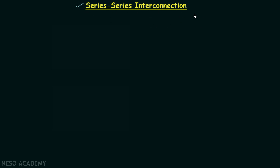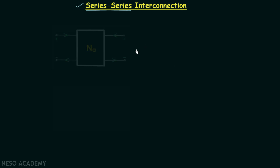In this type of interconnection, two or more 2-port networks are connected in a series-series manner. I will explain what series-series means after constructing the simplest series-series interconnection, which will have two 2-port networks. Let's say our first 2-port network is NA — this is port number 1, or the input port.